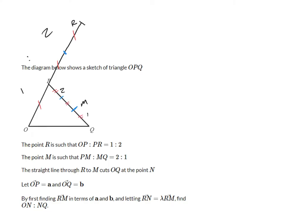So hopefully that kind of makes sense. We've extended OP to go to OR, so we have OP PR with a ratio of 1 to 2. This part is the same as this part is the same as this part in terms of length. And we've split PQ into the ratio of 2 to 1, where we have this point M.